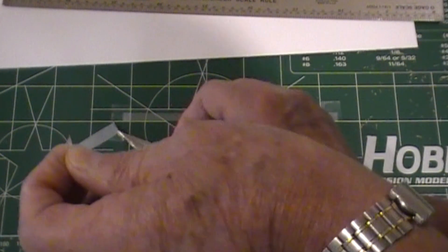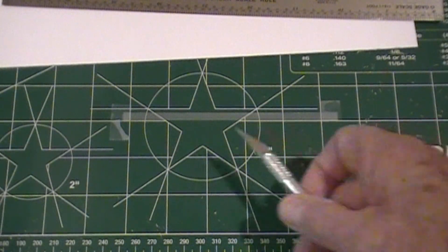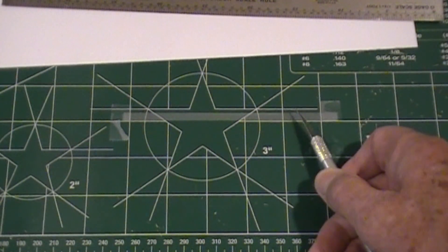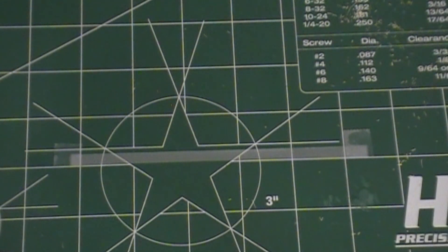There. And now we can use this section right here to make our hay bale with. Actually, if I had removed that piece of tape very carefully, I could have used that and made a second hay bale, but I'll have to do that one the next one.